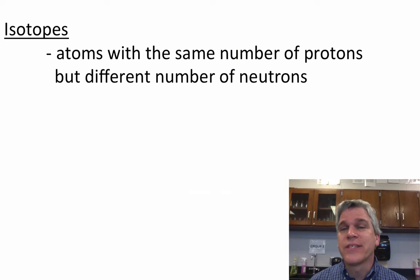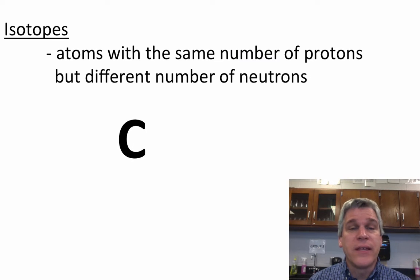An isotope is the atoms with the same number of protons, but different number of neutrons. So let me give you an example of this.